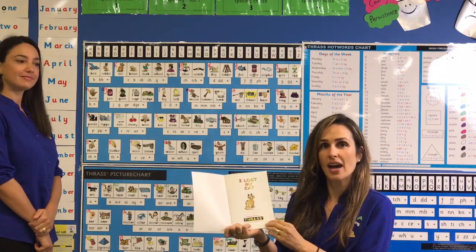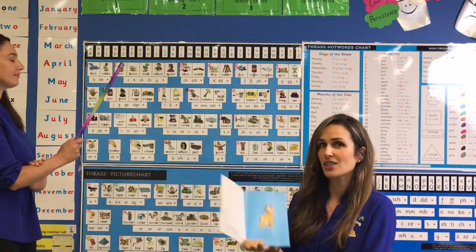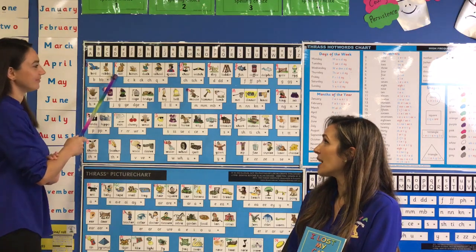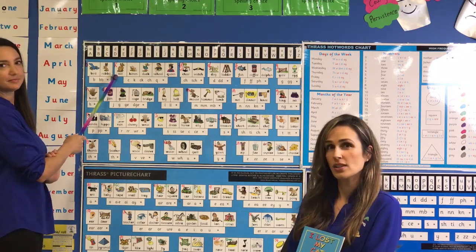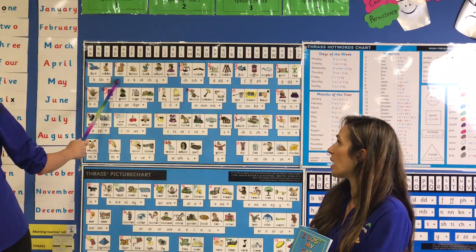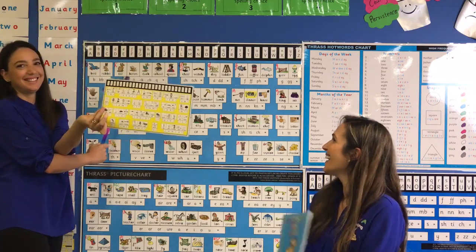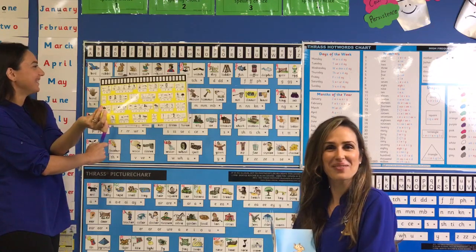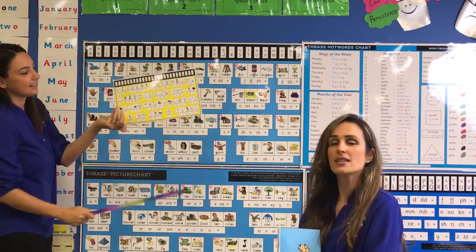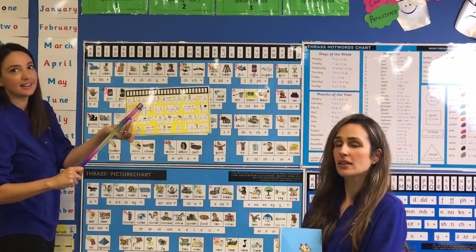I Lost My Cat. This is my cat. Now Lisa's going to show us where 'cat' is on the Thrass chart. Make sure you are on the consonant side. The consonant side is the side with the 26 letters of the alphabet up the top. It's in the first row — the second box is the K box — and in the word 'cat' the C makes the K sound.